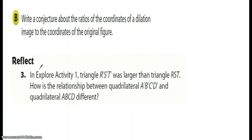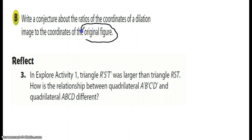Okay, so now that you're back — take a look at the information that you have. Write a conjecture — an educated opinion — about the ratio of the coordinates of a dilation image to the coordinates of the original figure. They use this term here, which is good because on a test it could say pre-image or it could say original. Just remember that your original is your pre-image.